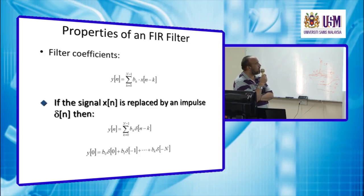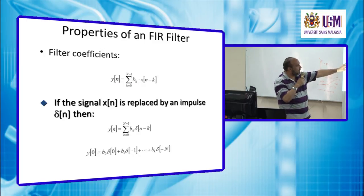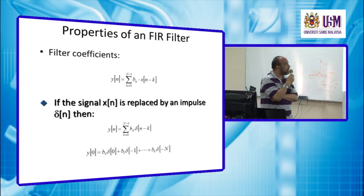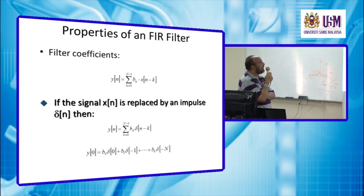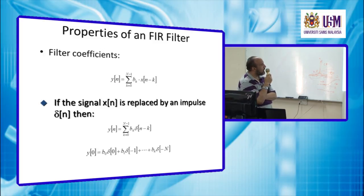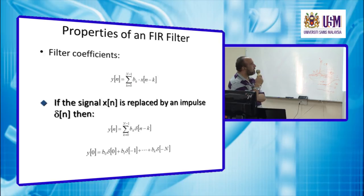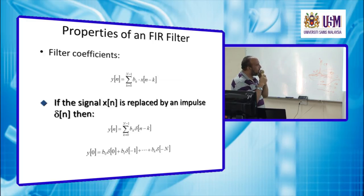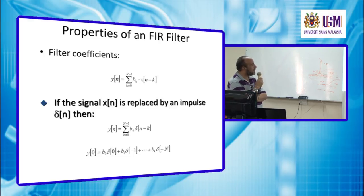Now suppose the input is the impulse function, the Dirac delta δ(n). Then y(n) = Σ(k=0 to N−1) bₖ · δ(n−k). Writing out the summation explicitly, we have b₀δ(0) + b₁δ(−1) + ··· for the first point in the signal.